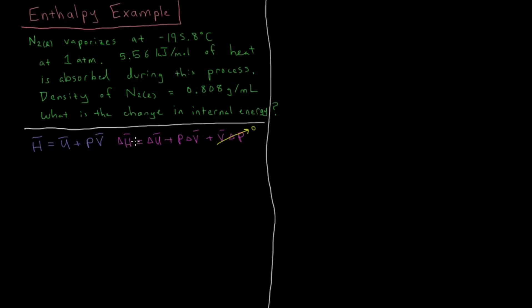So what we need to calculate is what delta H is and what delta V is, and then we'll be able to figure out what delta U is. For our delta H, we know that that is equal to the heat of the system at constant pressure. And the system absorbed 5.56 kilojoules per mole of heat. So the enthalpy is going to be plus 5.56 kilojoules per mole.